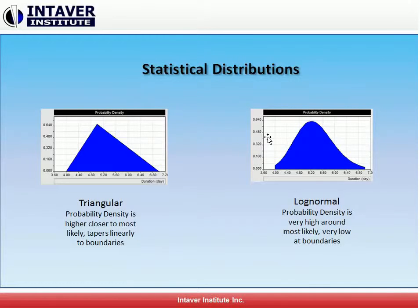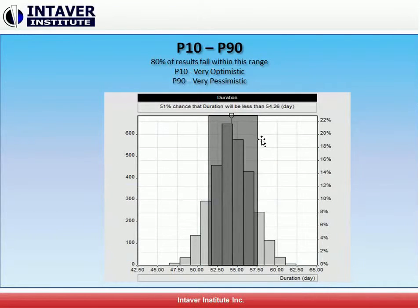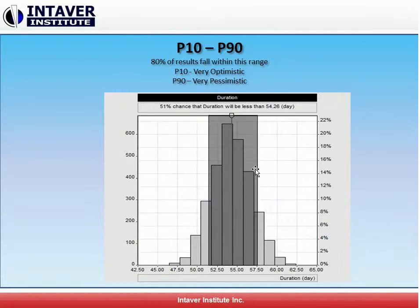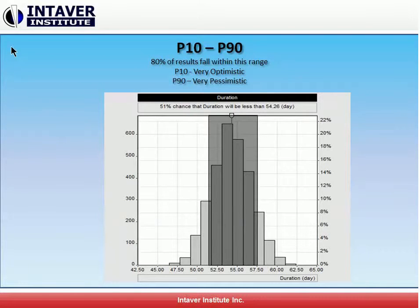After running the Monte Carlo simulations, we can analyze the outputs, typically using P10 as our low or very optimistic duration, and mean as our base, and anywhere from P70 to P90 as our high or pessimistic result. The relative difference between the low and high results is a measure of how likely the results will vary from the mean. This is known as standard deviation and is a measure of risk.